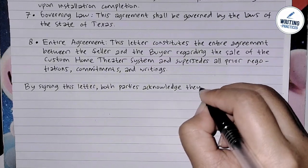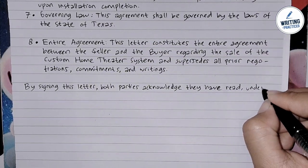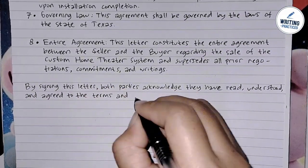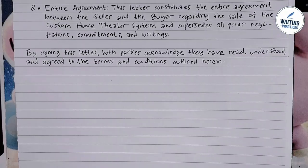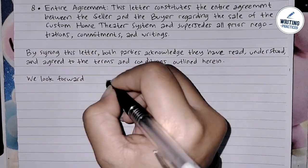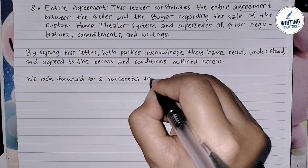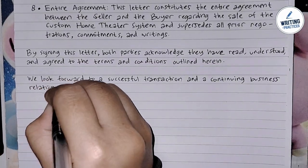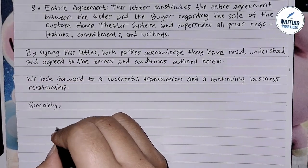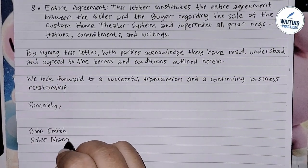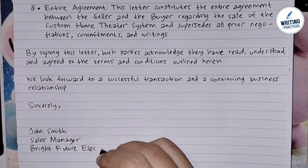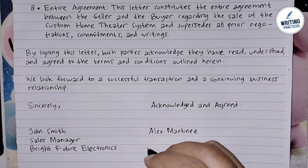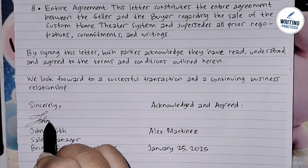In the closing paragraph, provide space for both parties to sign, indicating their agreement to the terms outlined. You can write: 'By signing this letter, both parties acknowledge they have read, understood, and agreed to the terms and conditions outlined herein.' If representing a company, you may also express enthusiasm: 'We look forward to a successful transaction and a continuing business relationship.' Finally, include the signatures of both buyer and seller to make the sales agreement letter legally binding. That's how you write a sales agreement letter step by step — I hope you find this video helpful. Thank you for watching and see you soon!